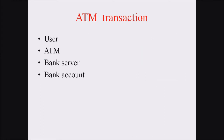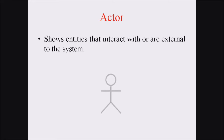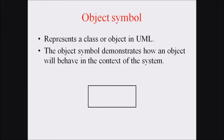In our ATM transaction example we can see different objects or actors like user, ATM, bank server, and bank account. An actor shows the entity that interacts with or is external to the system, represented with an actor symbol and actor name. An object represents a class or object in UML, using a rectangular box with the object name to show how it behaves in the context of a system.